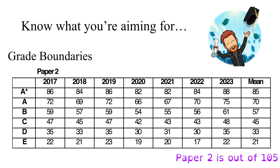It's worth pointing out that the grade boundaries do change each year. I've mapped them all out across those seven years, marking the score you need on each paper to achieve a particular grade, with the mean number of marks needed for each grade on the right-hand side. For instance, across all papers, on average 70 out of 105 gets you a grade A. It's always worth looking at the mark breakdown through the lens of the grade you're aiming for.